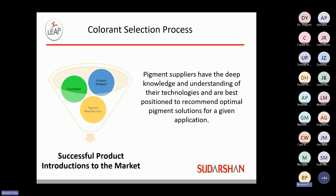The color selection process is very important. It takes the color formulator, the product designer, as well as the pigment manufacturer to come together to make sure that everything is known about a particular project. Pigment suppliers know a lot about the technology and properties of each pigment, so we can be a successful and important partner into application areas to make sure that the final product is successful in the marketplace.